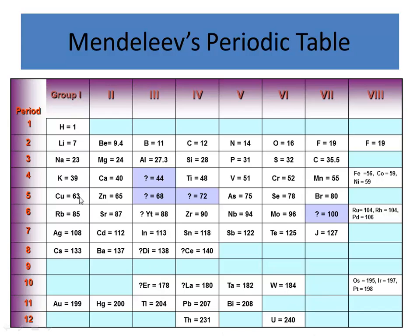He grouped them together and actually predicted that elements existed before they were discovered. If you look, this is Mendeleev's periodic table — it's a little different than ours, but there are a few things that are consistent. Look next to calcium. Calcium is in the second column, the second family of the alkali earth metals.